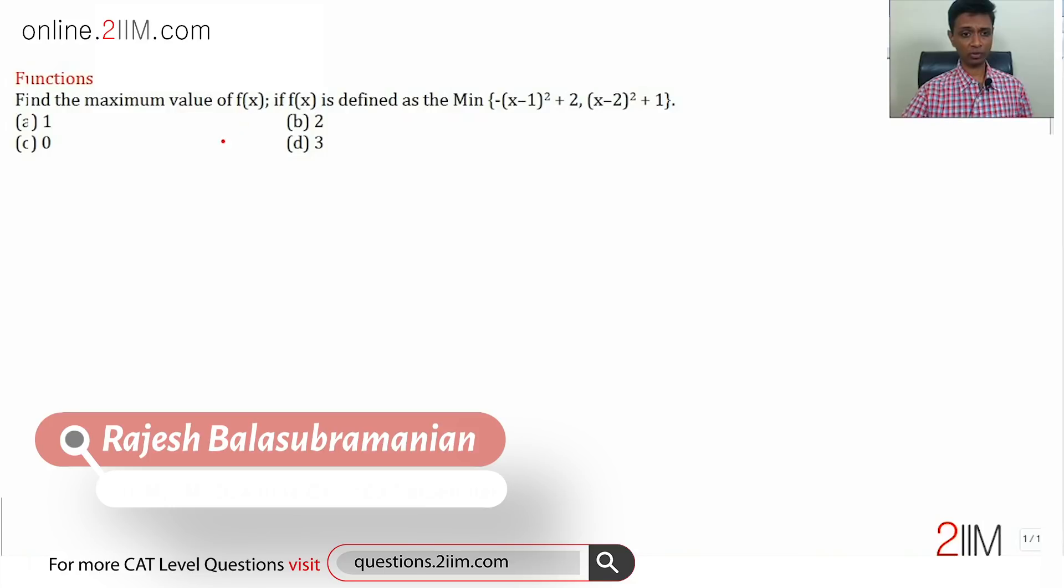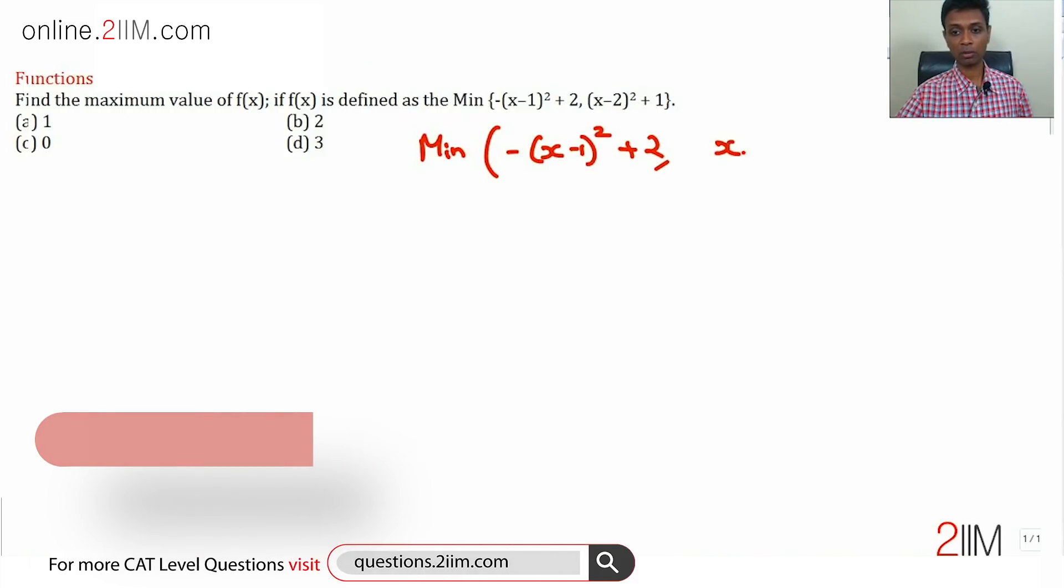We need to find the maximum value of f(x), where f(x) itself is defined as the minimum of -(x-1)² + 2 and (x-2)² + 1.